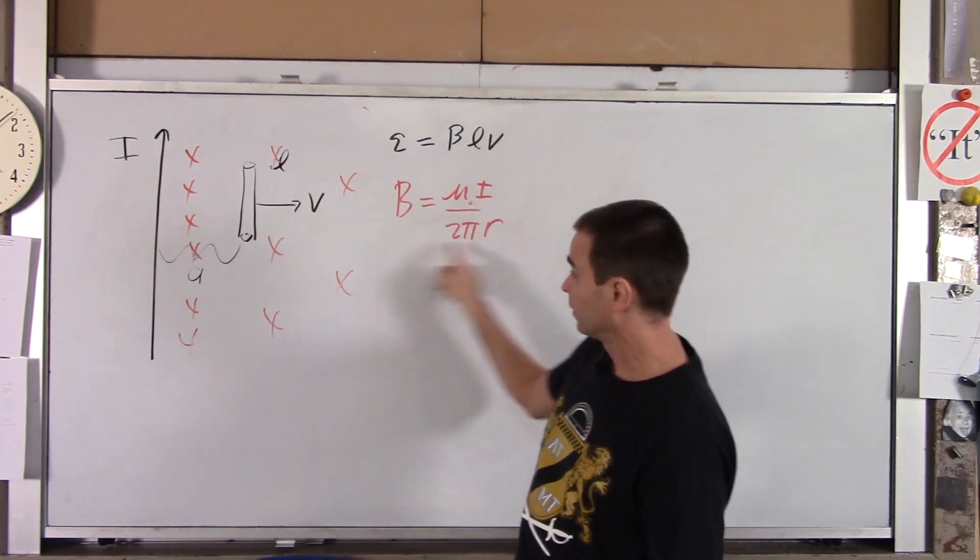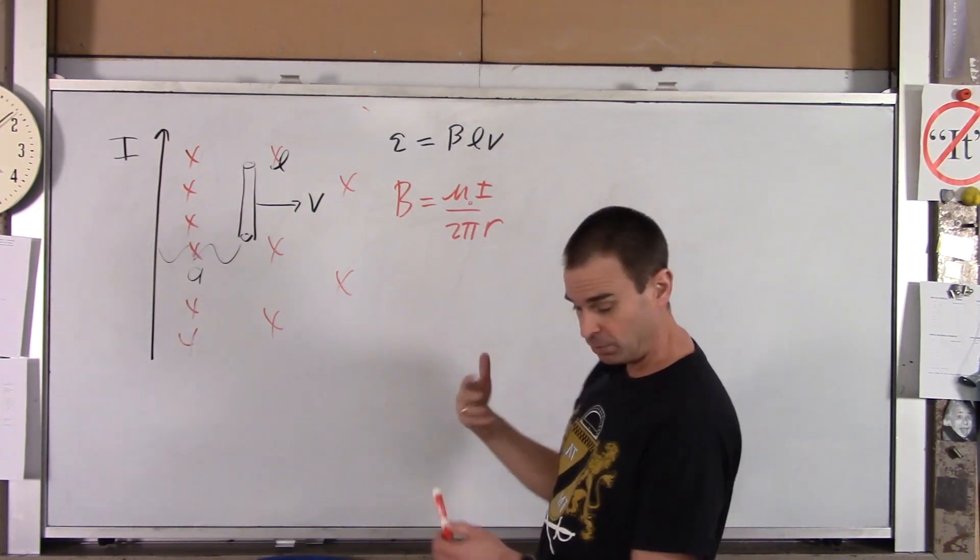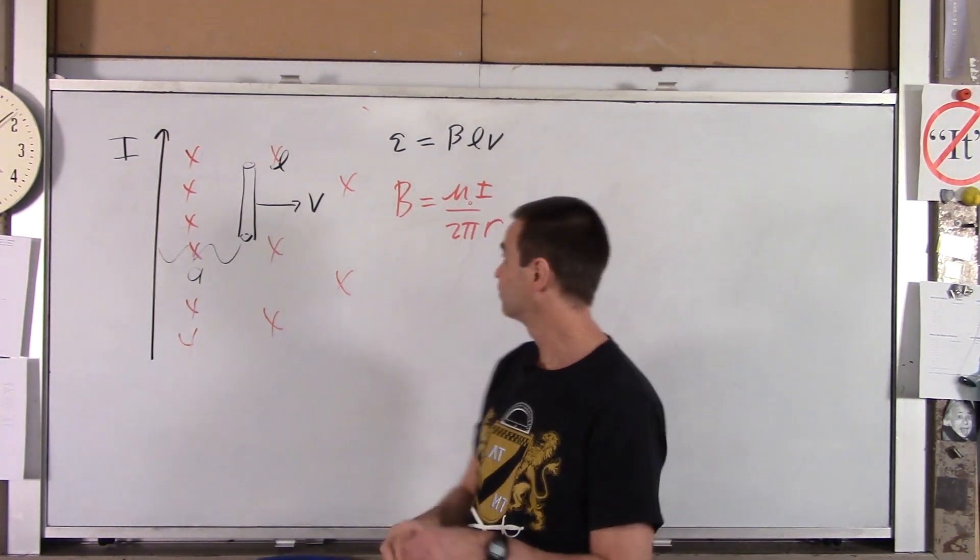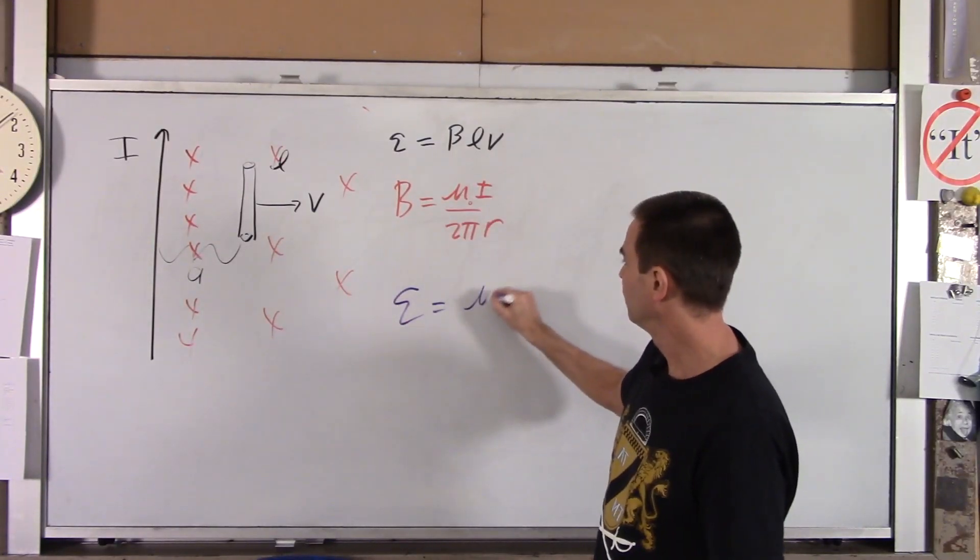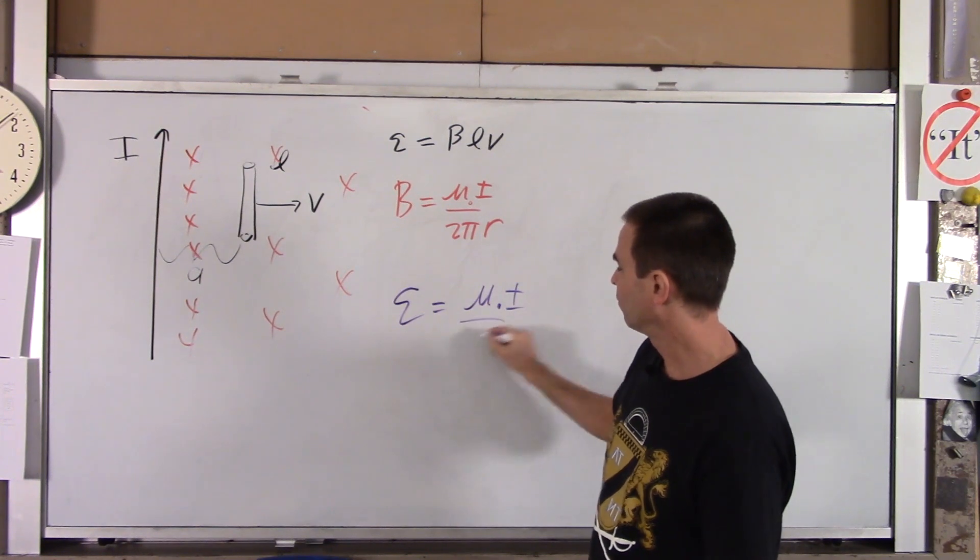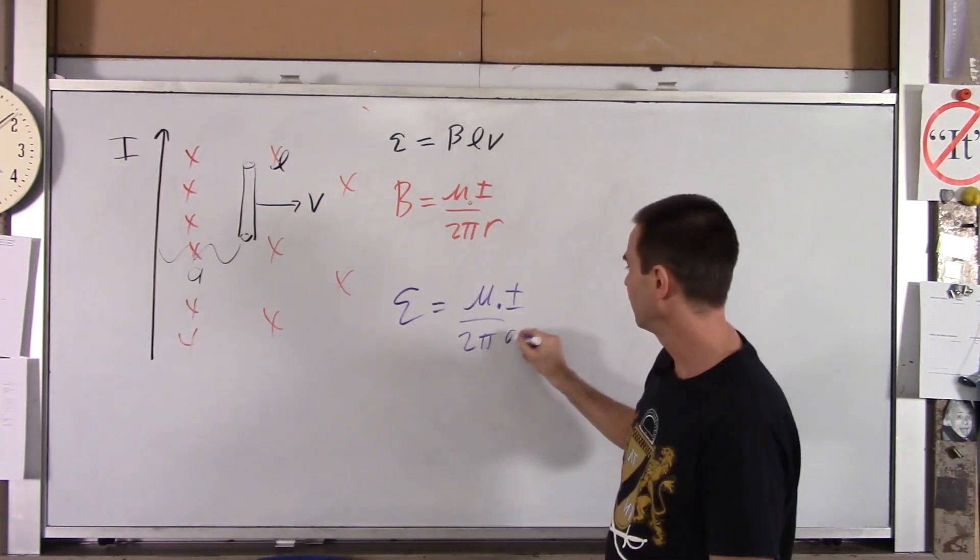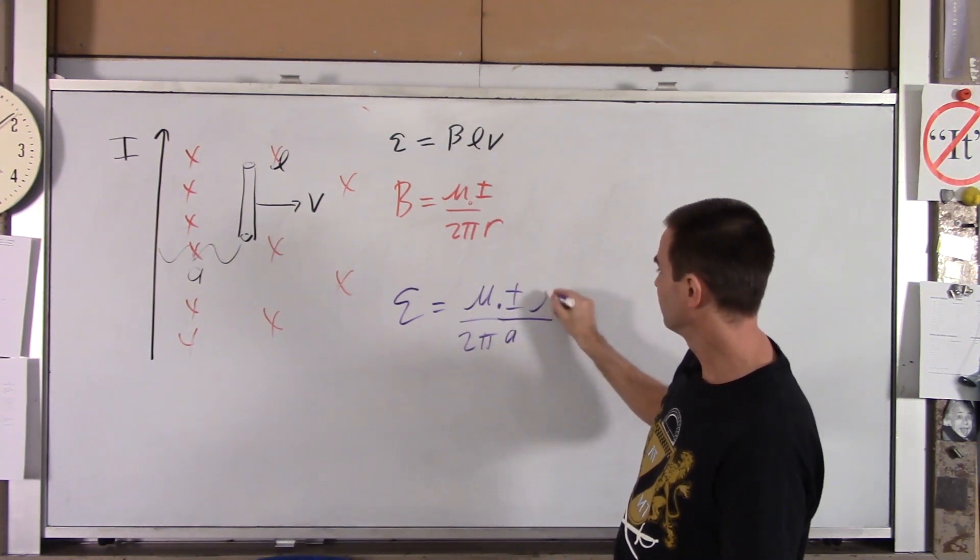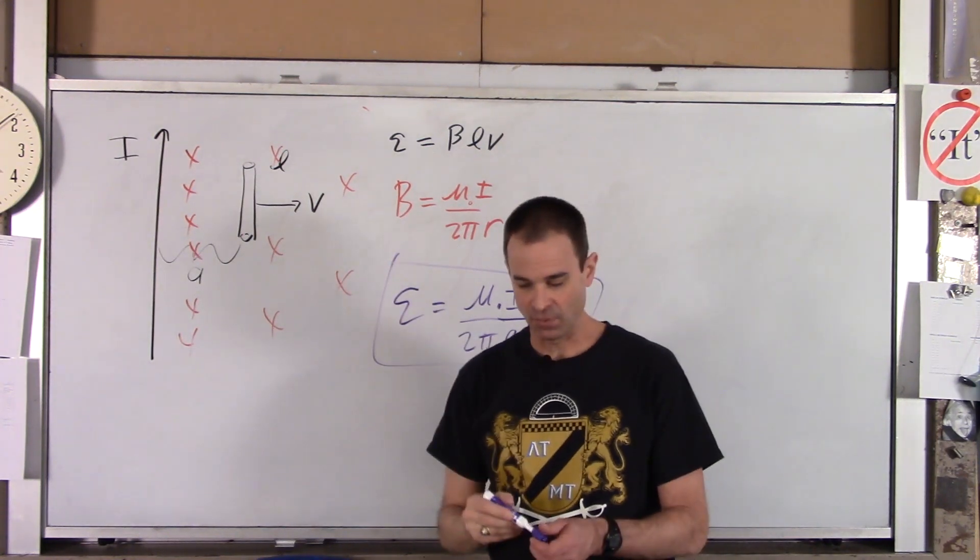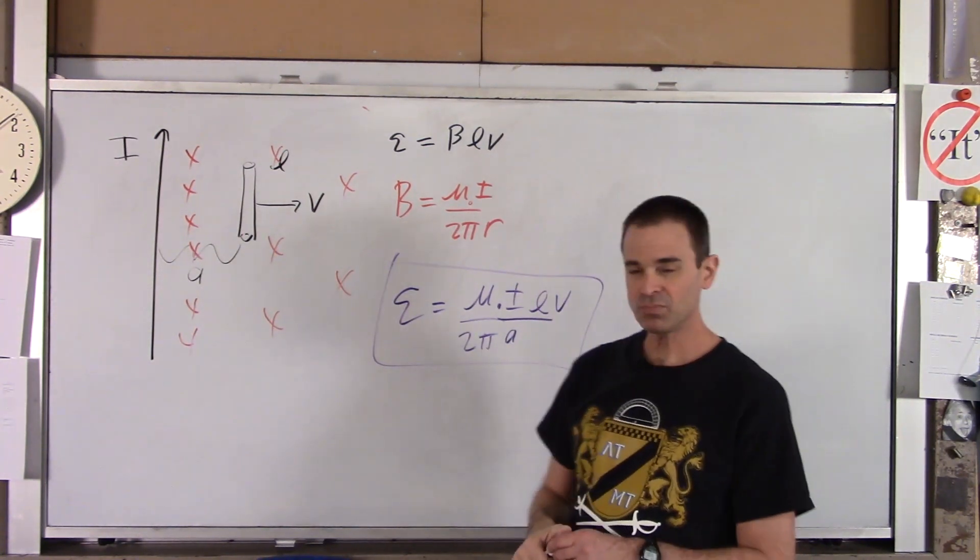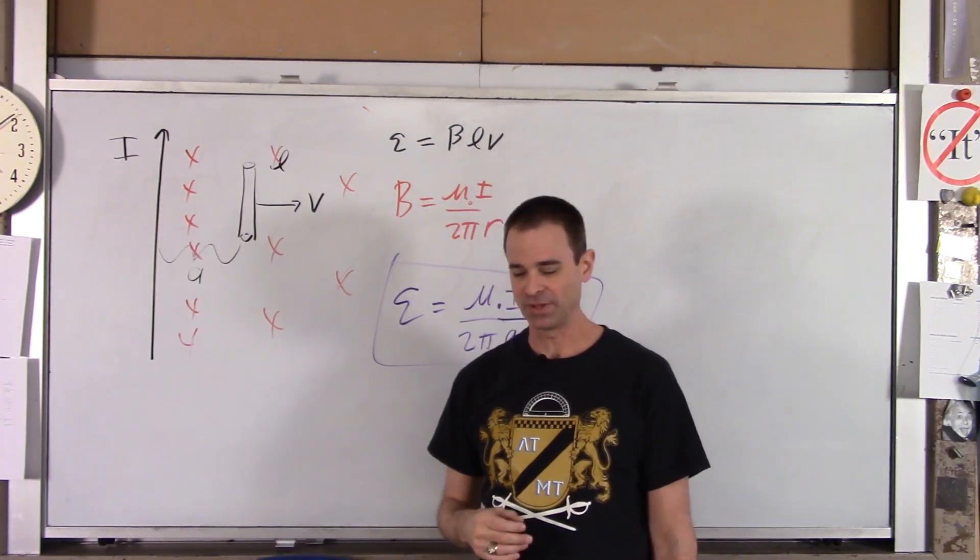So in this case, r is simply A. That's how far away we are from the wire. And you pretty much got it. We can do the magnitude first. We pretty much got it. EMF is simply B, which is all this. So mu naught I over 2 pi. We sub in for r, we sub in A. And then times L and V. So that is the magnitude of the voltage, the difference in voltage from the top to the bottom of the little chunk of wire that's moving.